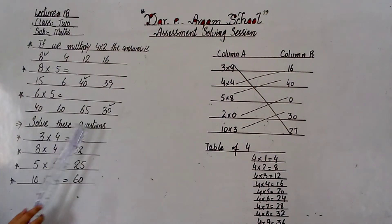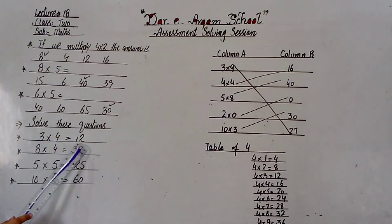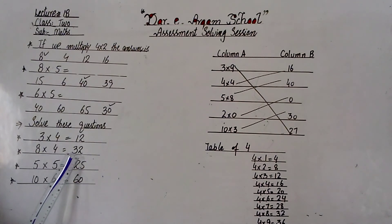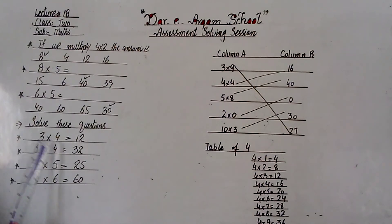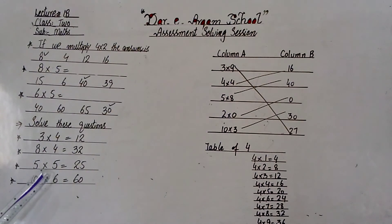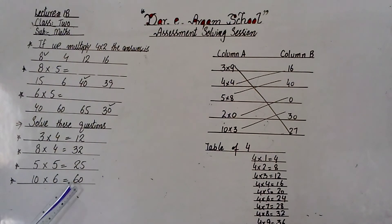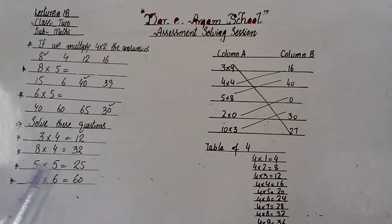Solve these questions. 3 multiplied by 4 is equal to 12. 8 multiplied by 4 is equal to 32. 4 multiplied by 4 is equal to 32. 5 multiplied by 5 is equal to 25. 5 multiplied by 6 is equal to 60. 6 multiplied by 6 is equal to 60.